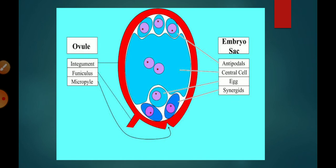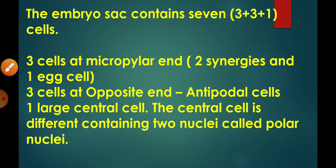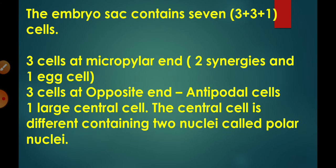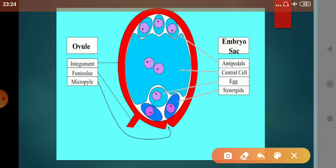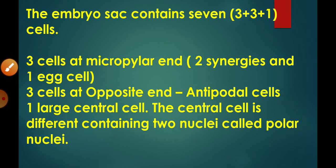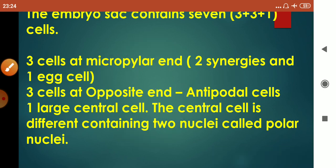Here we see the difference between ovule and embryo sac — many students are confused about where the embryo sac is versus the ovule. The ovule is on the outside and the embryo sac is inside it. The embryo sac contains seven cells: three antipodal cells, one egg cell, two synergids, and one central cell containing two polar nuclei. Together that gives eight nuclei. Seven cells, eight nuclei.